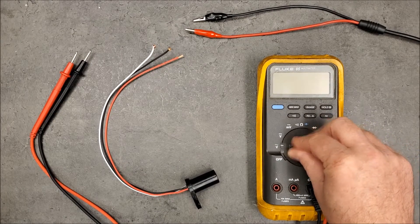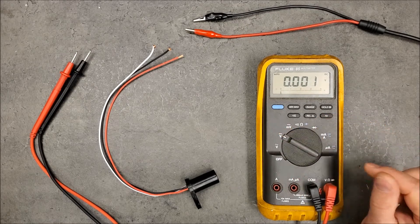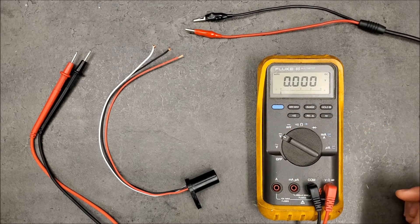First, we want to turn our multimeter on. Mine has an auto scale. If yours has a scale of voltages, you'll want to be on the 20-volt scale.